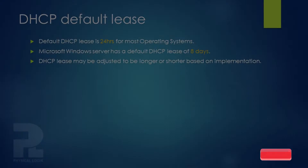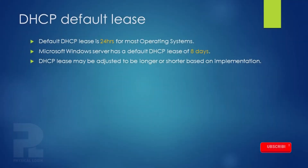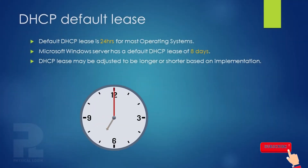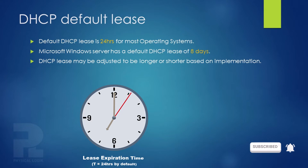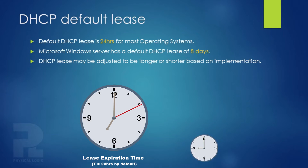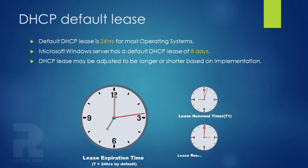The default lease time for IP configurations obtained from a DHCP server is 24 hours. This corresponds to the value of the lease expiration timer which controls lease expiration. The other timers are the lease renewal timer and the lease rebinding timer.